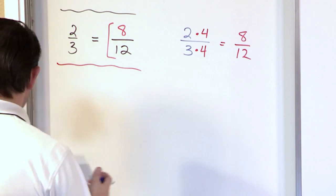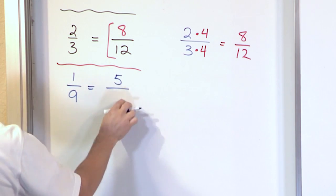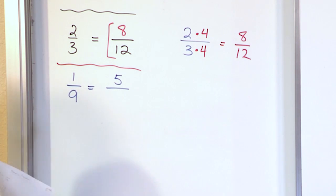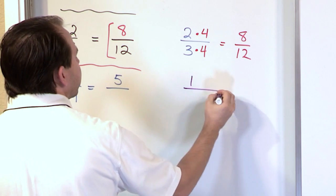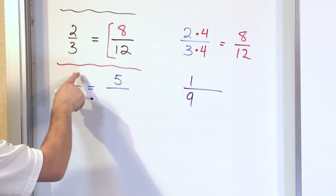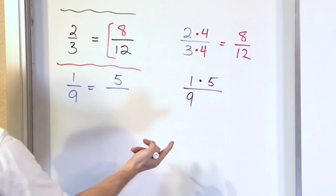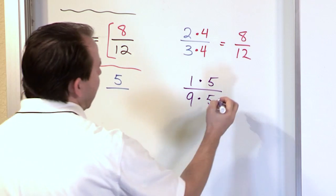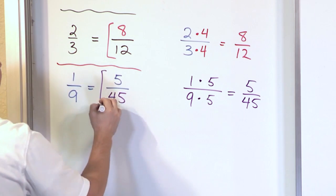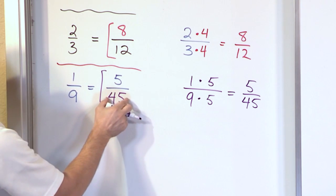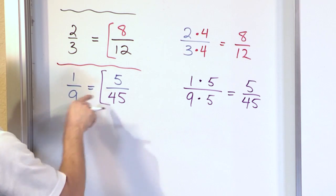Let's move on to another one. Let's say I have 1 ninth, and I'm claiming that it's equal to a fraction with a 5 on the top, and I'm trying to figure out what would be on the bottom. What number would be on the bottom to make these two fractions equal? The best way to proceed is to start with your 1 ninth and say, I'm trying to get to 5 on the top. What do I have to multiply here to give me a 5? I'll need to multiply by 5, because 1 times 5 gives me 5. But if I do it on the top, I'll also need to do it on the bottom to keep it balanced. So I'll have 5 over 45, because 9 times 5 is 45.